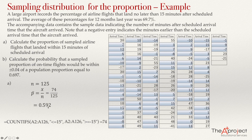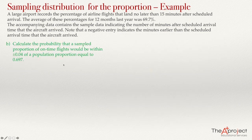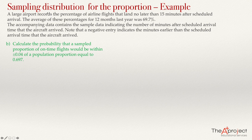So the sample proportion is 74 divided by 125, which equals 0.592. This answers the first question — we have computed the proportion of sampled airline flights that landed within 15 minutes of scheduled time. For the second question, we calculate the probability that the sample proportion of on-time flights would be within plus or minus 0.04 of a population proportion equal to 0.697. This is where we use the features of the sampling distribution for the proportion.